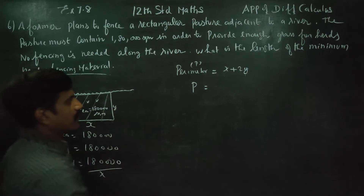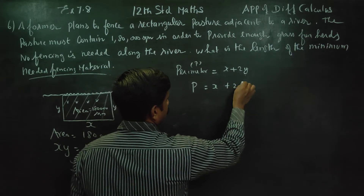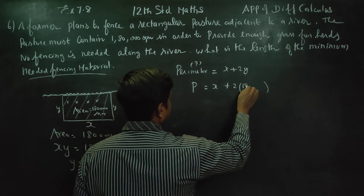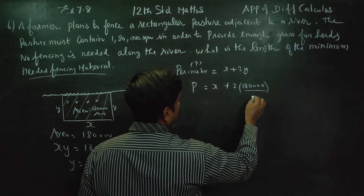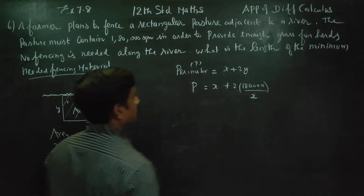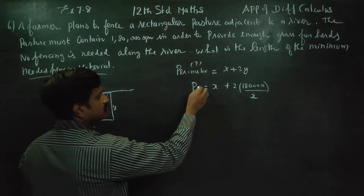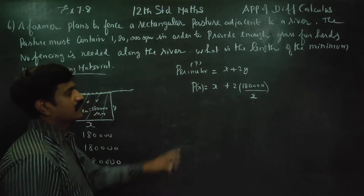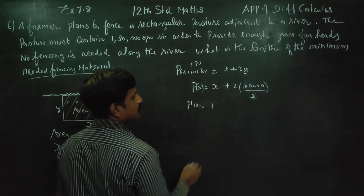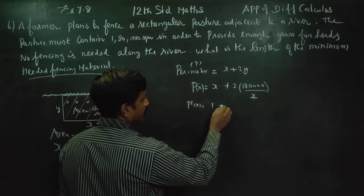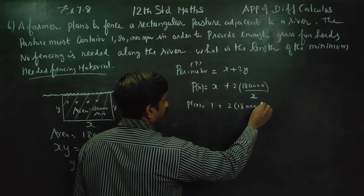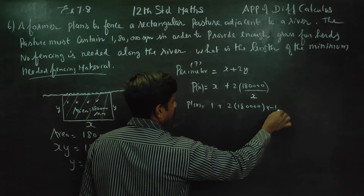P of x is equal to x plus 2 into y, where y is equal to 1,80,000 by x. Substituting, P becomes a function of x. Now we find P dash x by differentiating: 1 plus 2 into 1,80,000 by x, differentiating gives minus 1 over x squared.